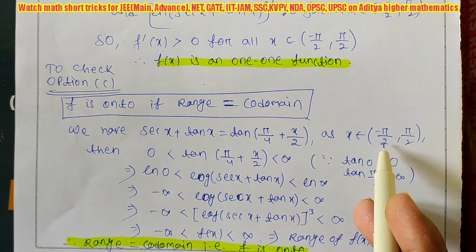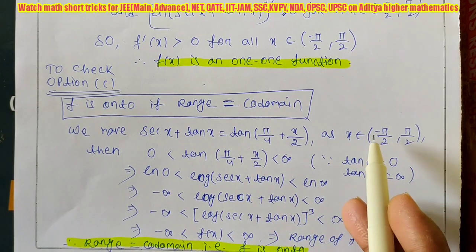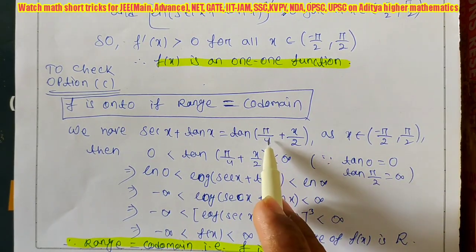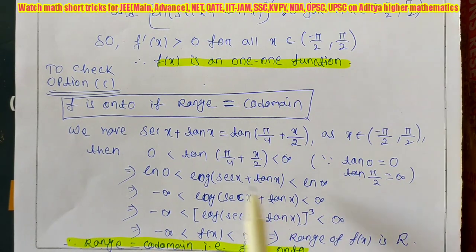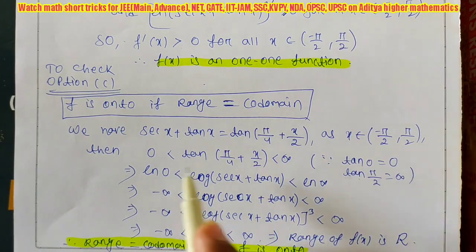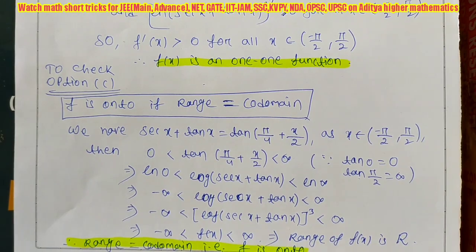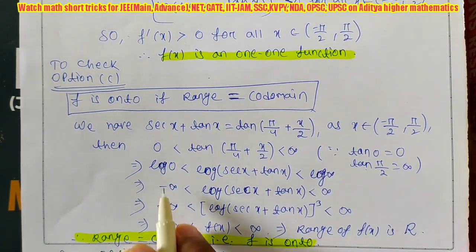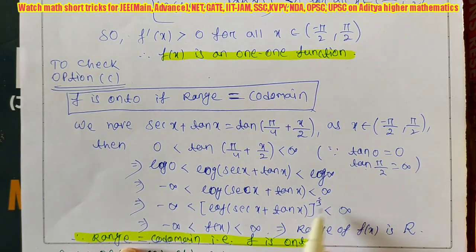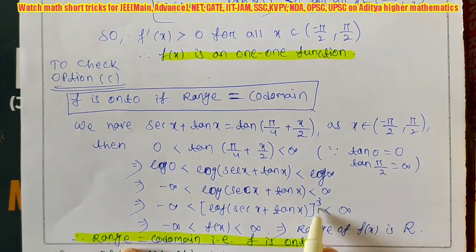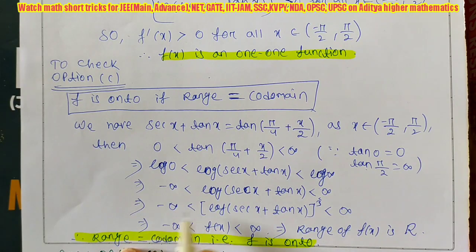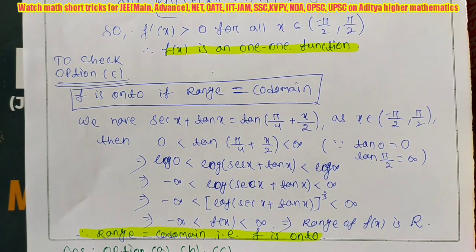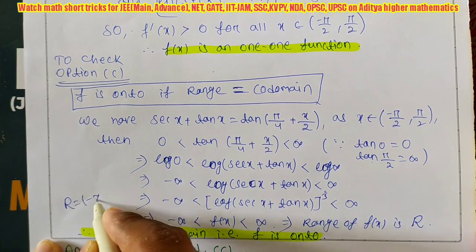When x = -π/2, we get tan(π/4 - π/4) = tan(0) = 0. When x = π/2, we get tan(π/4 + π/4) = tan(π/2) = ∞. So sec x + tan x ranges over (0, ∞). Taking logarithm: log(0) = -∞ and log(∞) = ∞, so the log ranges over (-∞, ∞). Then raising to the power 3 (an odd power): (-∞)³ = -∞ and (∞)³ = ∞. So f(x) ∈ (-∞, ∞) = ℝ.